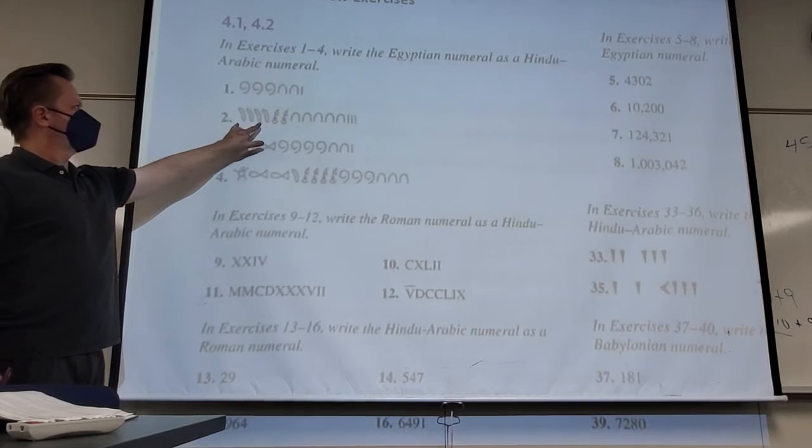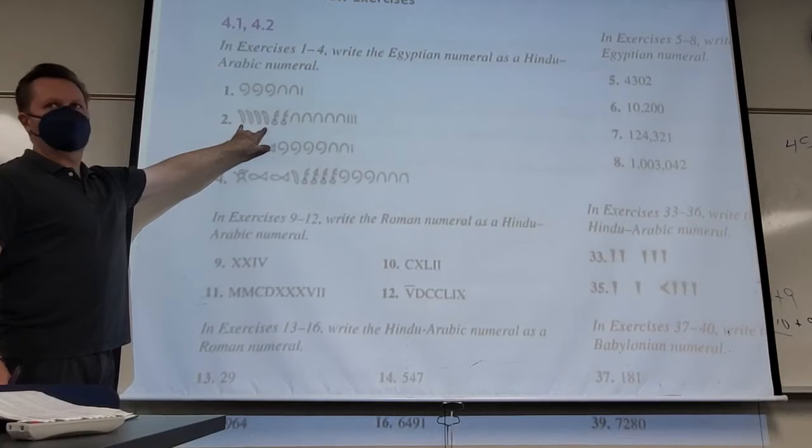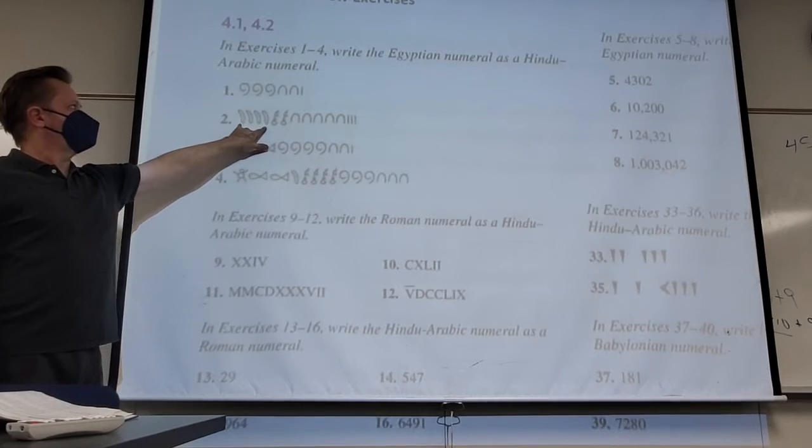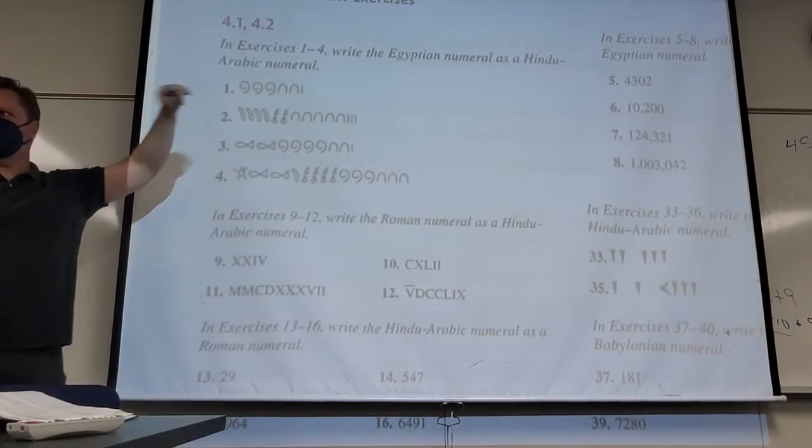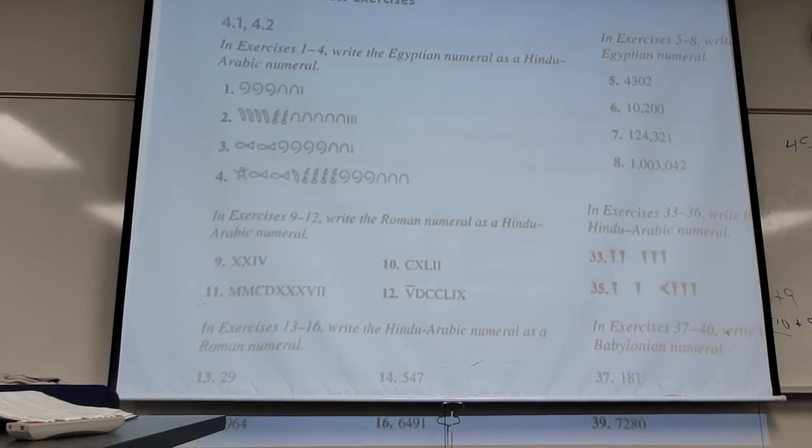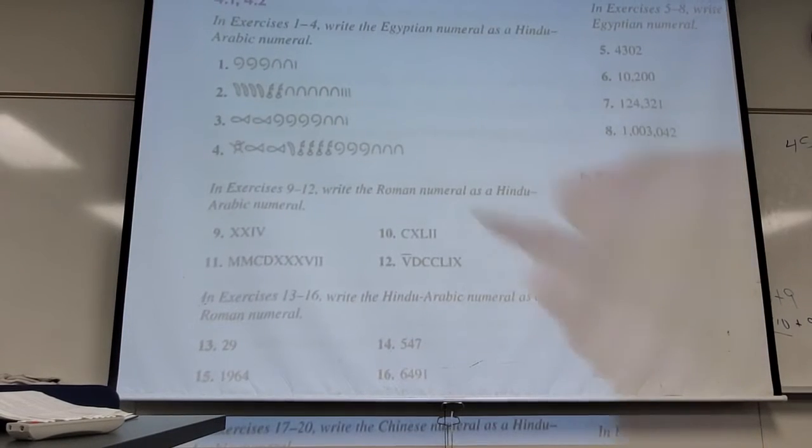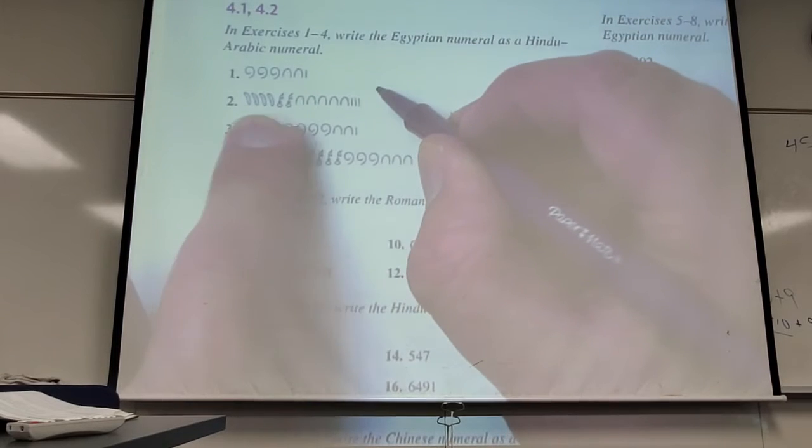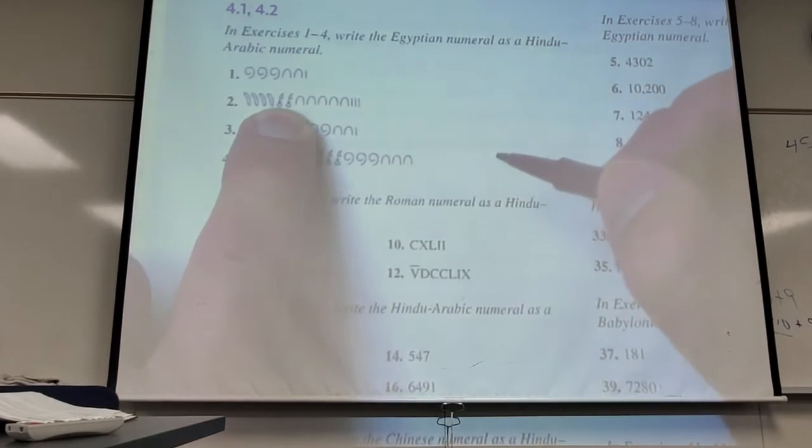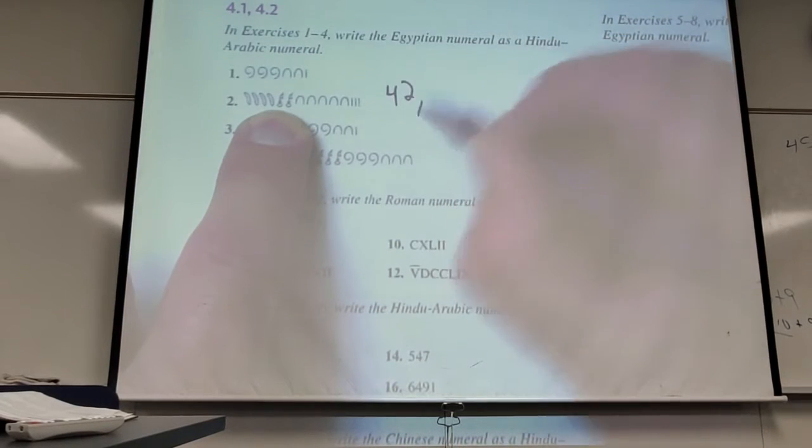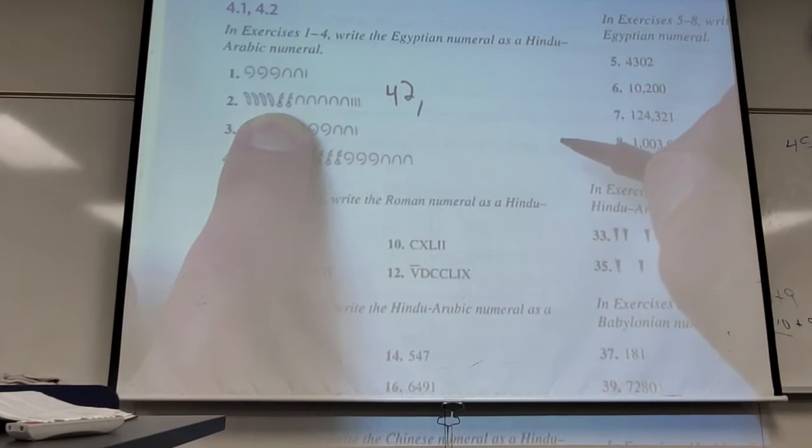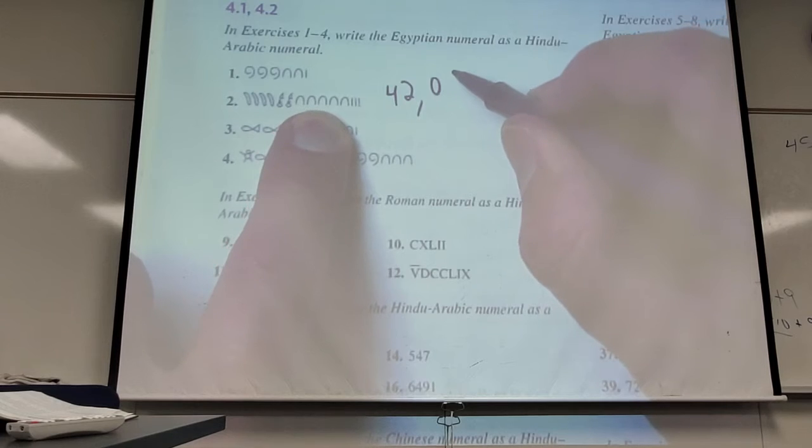What did you get for number two? 42,000. Yeah, because the pointy finger is 10,000. So I got 40,000. Each little lotus flower is 2,000, so you got 42,000. Do I have any hundreds? No. Five fields. Three.